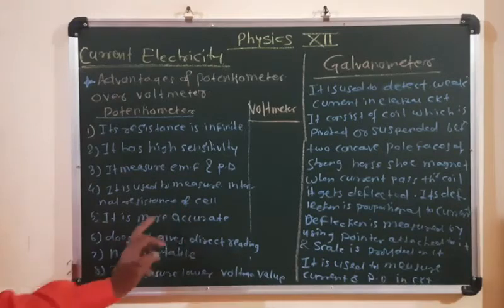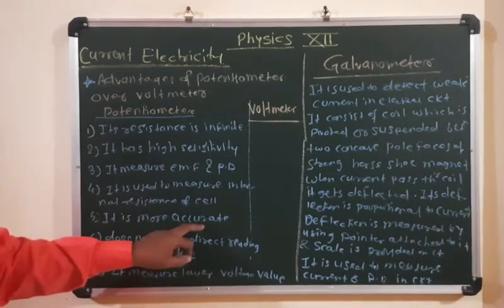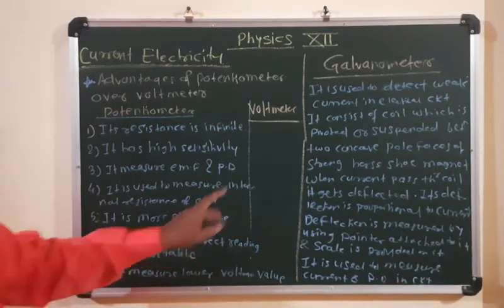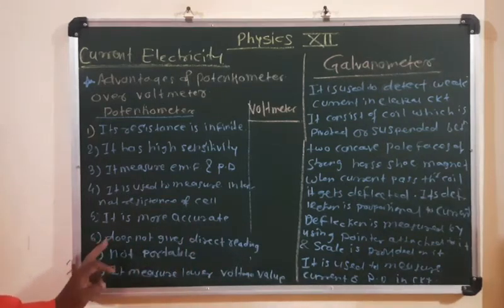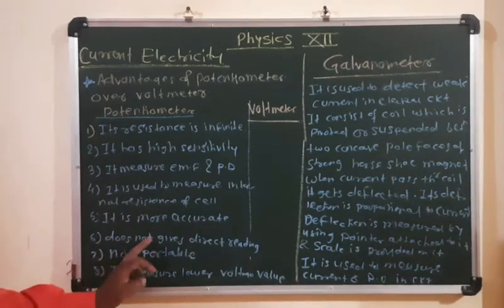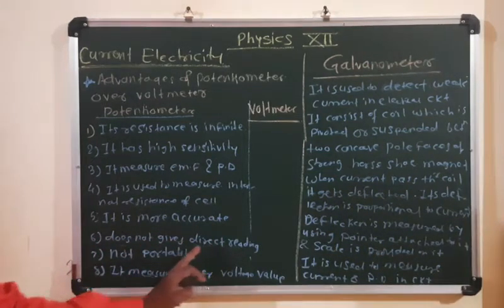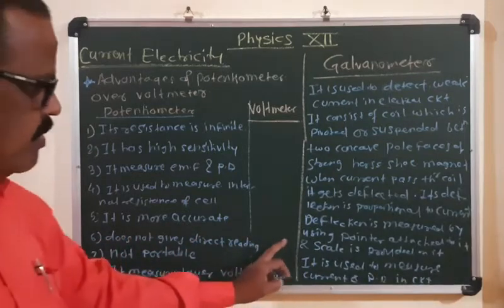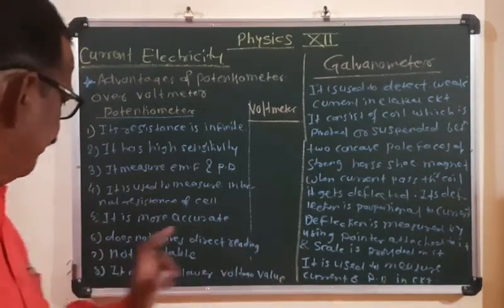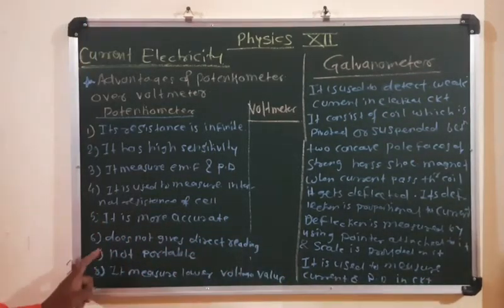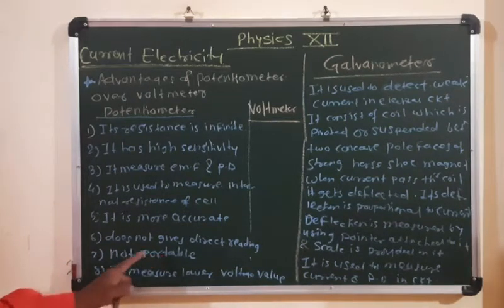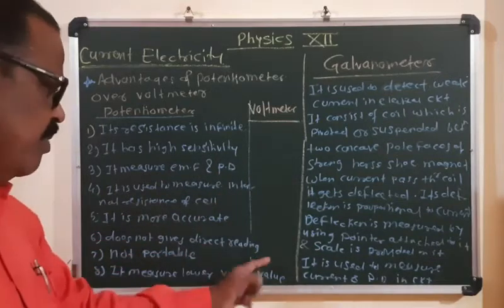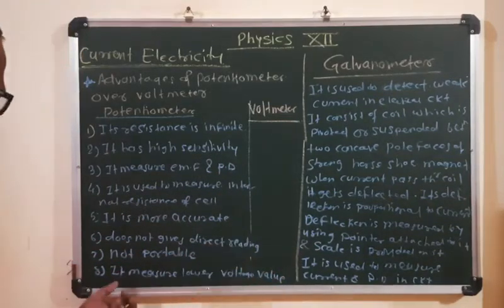The fifth advantage is that potentiometer is more accurate as compared to voltmeter. Potentiometer does not give a direct reading, but voltmeter gives a direct reading. Also, the potentiometer instrument is not portable, but voltmeter is a portable device.